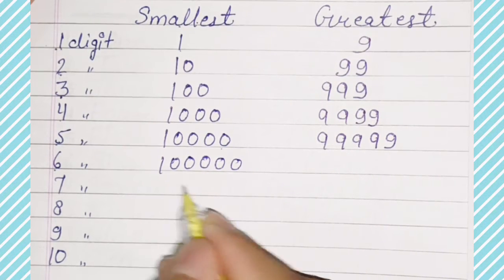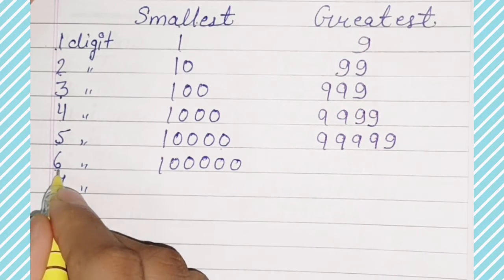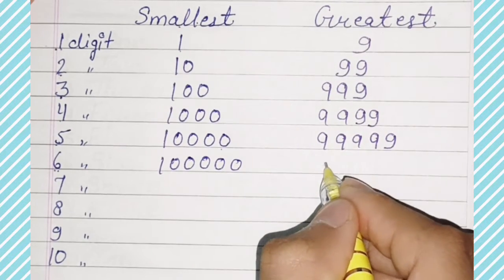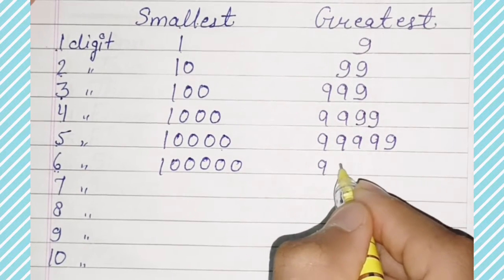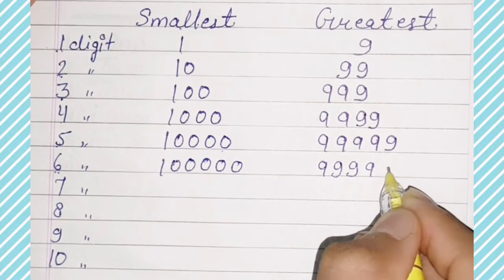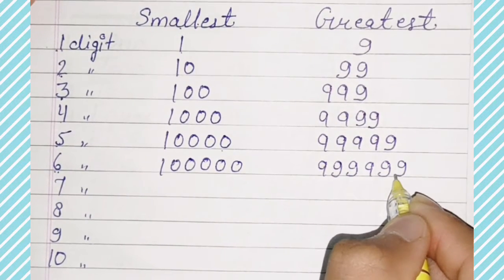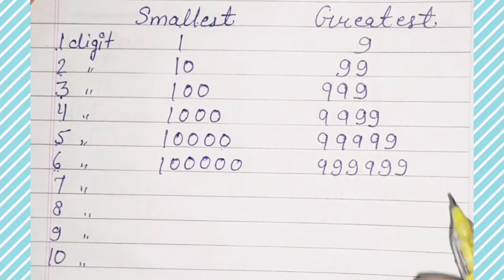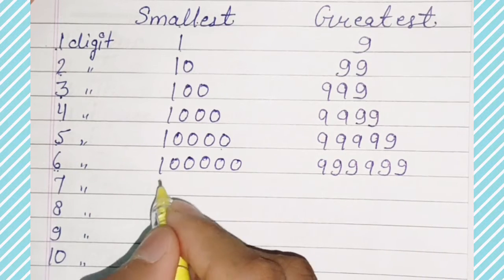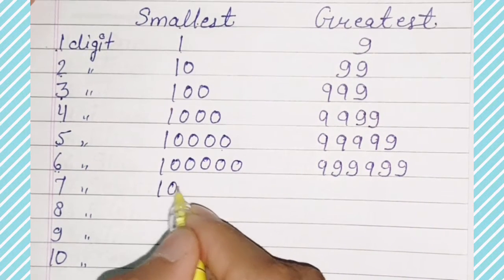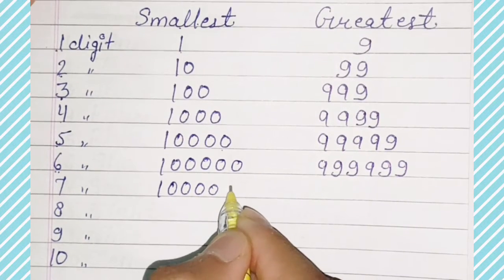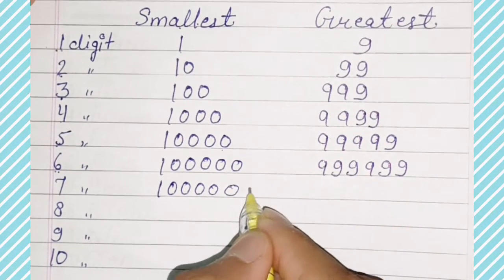6-digit greatest number is 999999. 1, 2, 3, 4, 5, 6. 7-digit smallest number is 1000000.